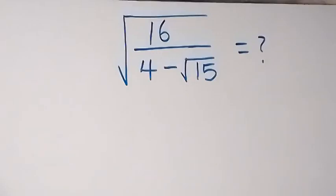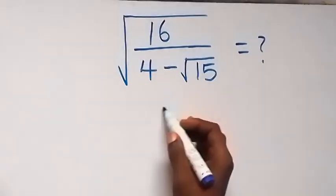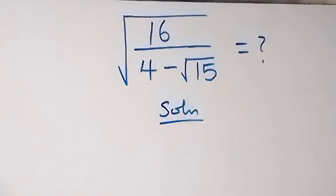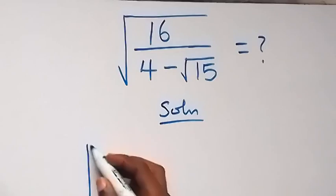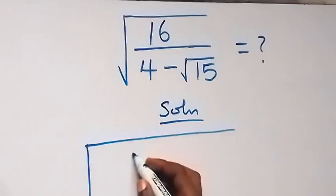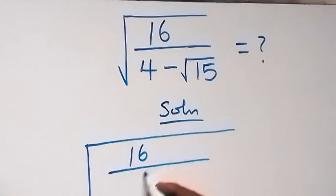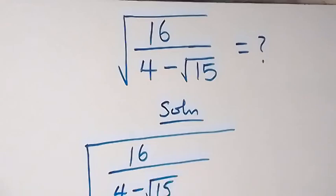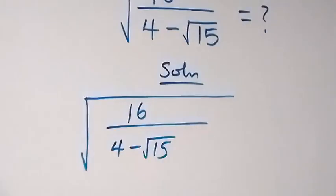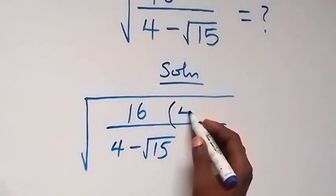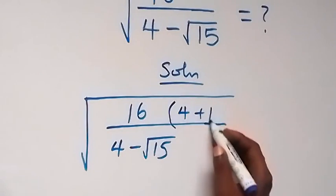Hello, you are welcome. To solve this square root problem, we can multiply and divide by the conjugate — that is, we rationalize. We have the square root of 16 over 4 minus root 15, then we multiply and divide by the conjugate, which is 4 plus root 15.